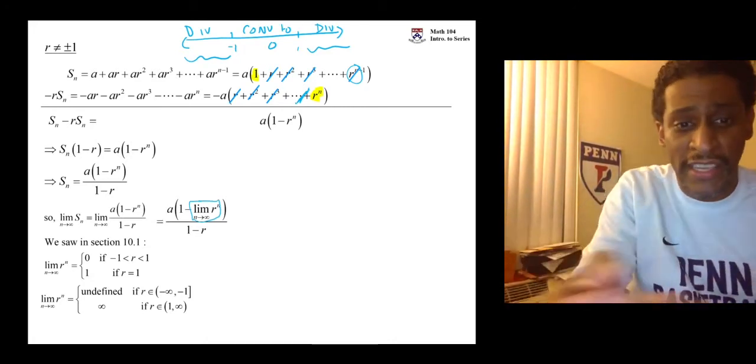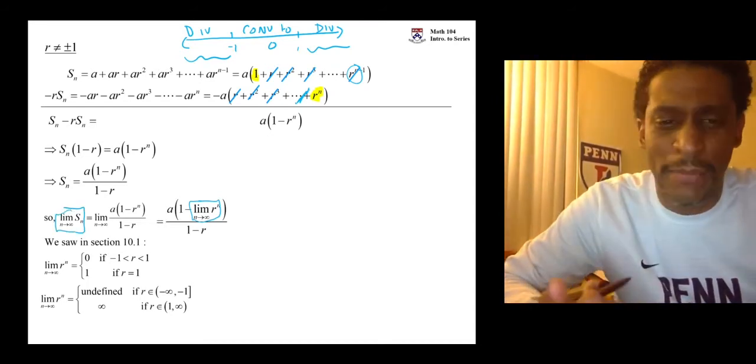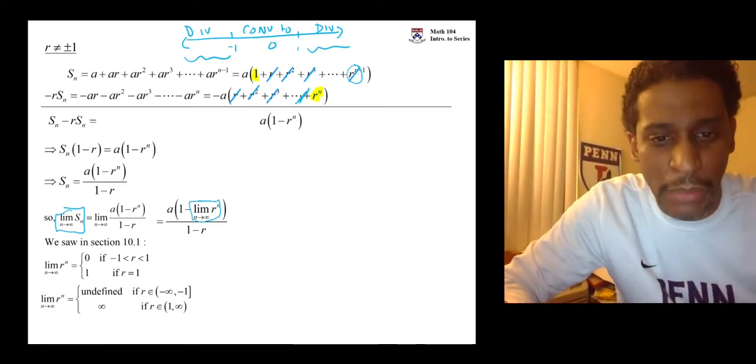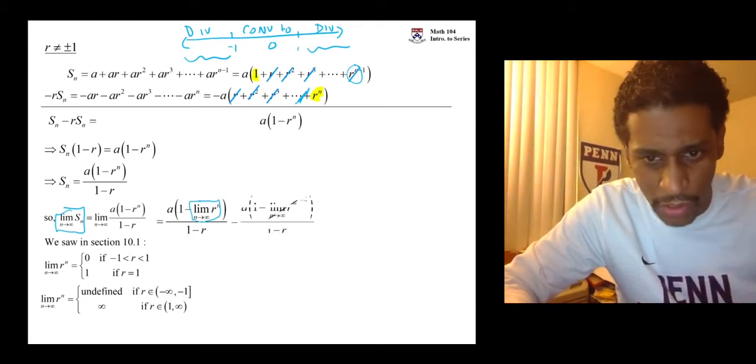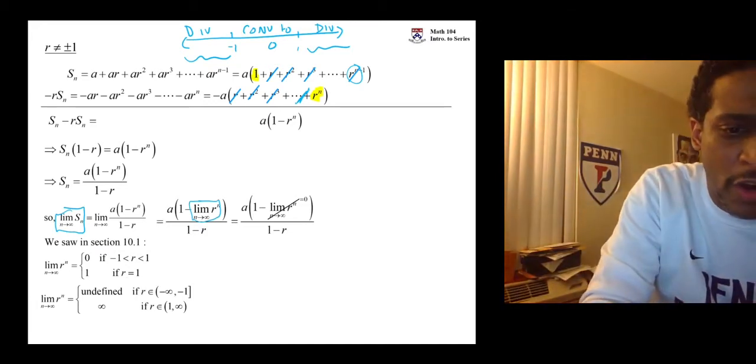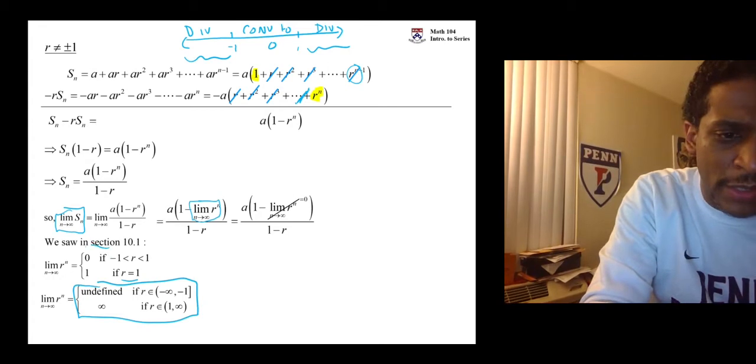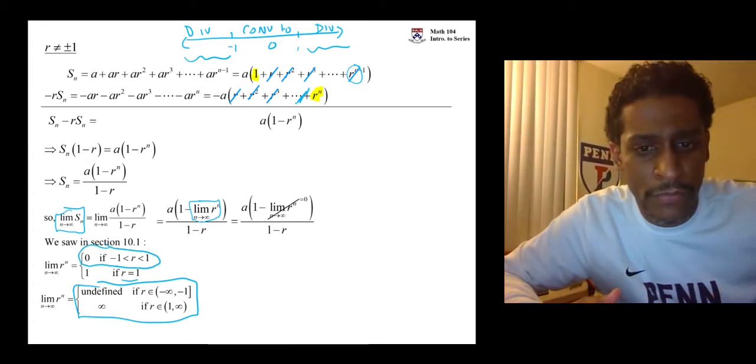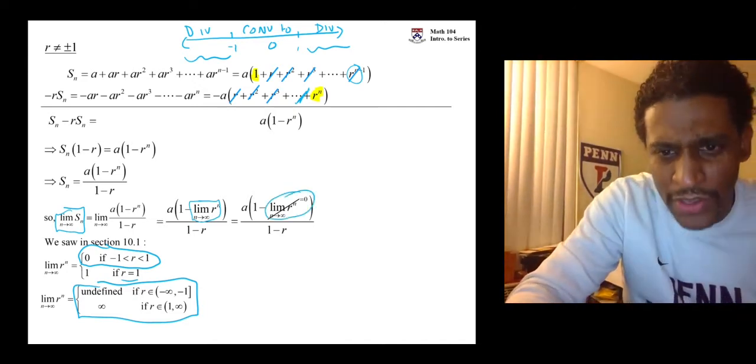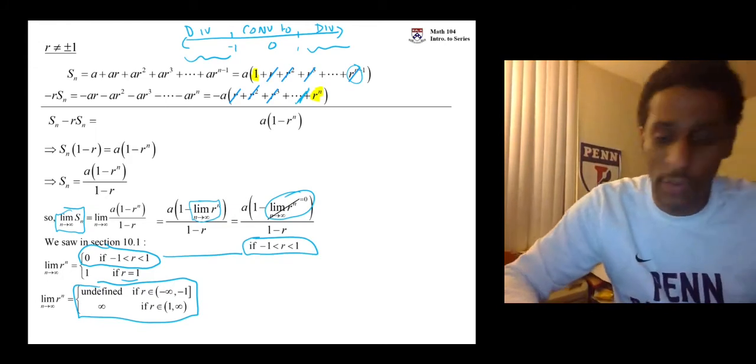For us to end up with a limit as n goes to infinity, S sub n being something that is a finite number, what needs to happen then is we need for that to go to 0. We already know that it diverges when R is equal to 1. We know it diverges when R is equal to negative 1. So these are the only ones it has a chance to converge for. And what does it converge to? Well, if that part goes to 0, then you're just looking at A over 1 minus R, so long as you're in between minus 1 and 1 for R.